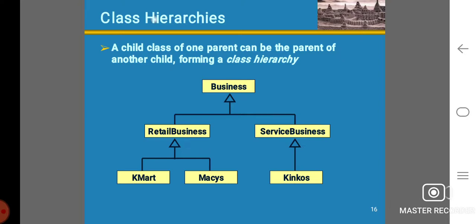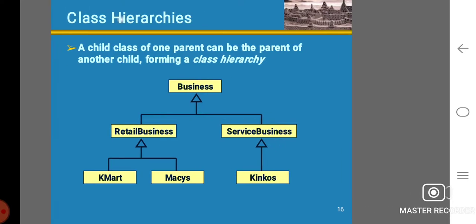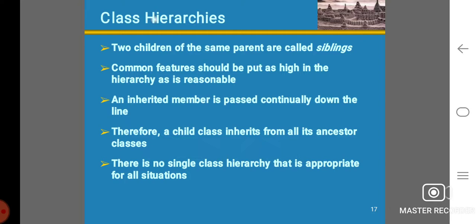KMart and Macy's are retail businesses; Kinko's is a service business. In class hierarchies, two children of the same parent are called siblings. Common features should be put as high in the hierarchy as is reasonable. Inherited members are passed continuously down the line, therefore a child class inherits from all its ancestor classes. There is no single class hierarchy that is appropriate for all situations.